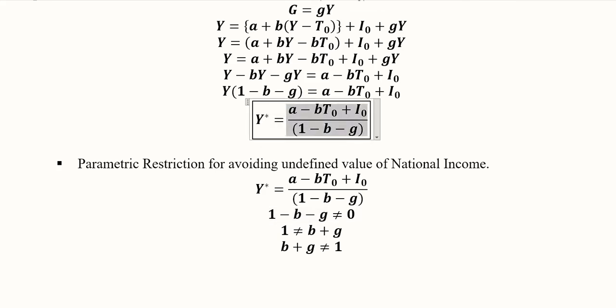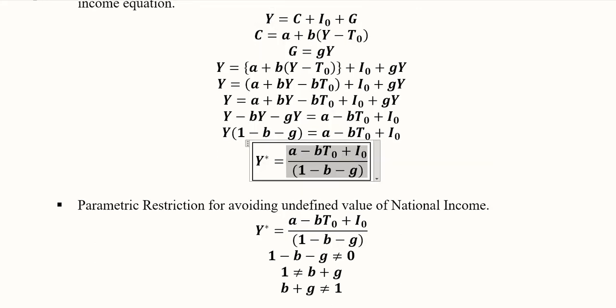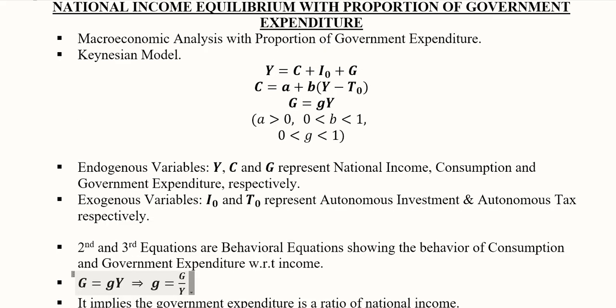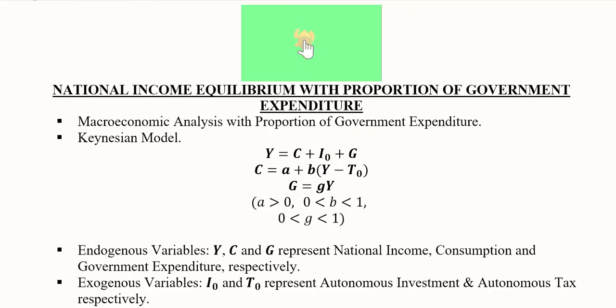So this is a kind of equation which is showing that national income is now a function of investment, taxes, and the proportion of the government expenditures spent. So this is how we can analyze the national income in a situation where we are considering the possibility of endogenous level of government expenditure.